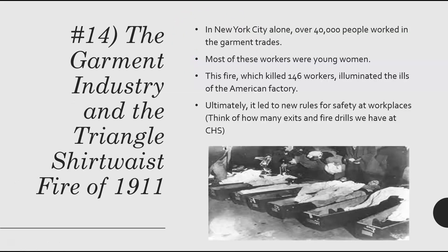Another example is the garment industry — and this is a horrible story. New York City alone had 40,000 people who worked in the garment trades, and most were young women. The Triangle Shirtwaist fire happened because workers didn't have adequate exits, and management had chained exit doors to prevent workers from sneaking off for cigarette breaks. It showed how dangerous American factories were — 146 people died, burned, asphyxiated, or jumping from windows. Ultimately it led to new safety rules at workplaces; think of how many exits and fire drills we have at school every year — you can connect that to the Triangle Shirtwaist disaster.